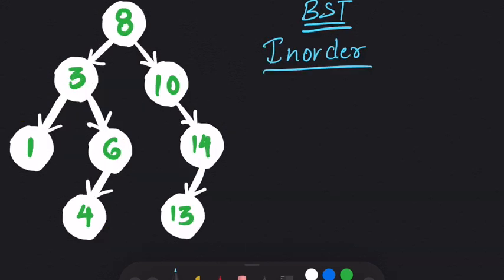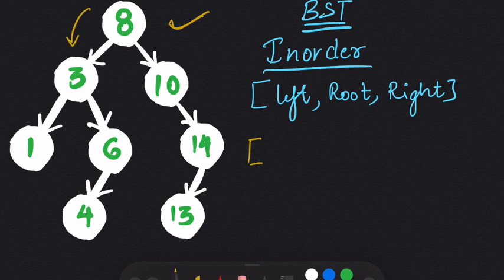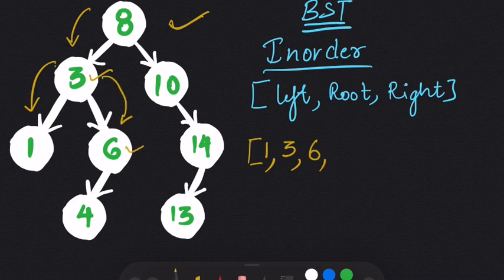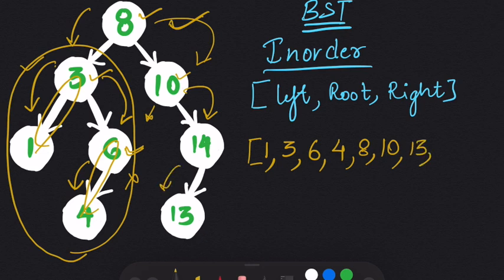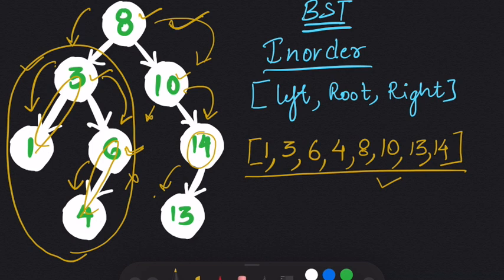Next, let's look at in-order traversal. For in-order, we first pick the left subtree, then the root, then the right subtree. We go to node 3's left child, which is 1, and enter 1. Then we enter the root 3, then the right node 6. At 6, we enter left child 4, and 6 has no right node. After the left subtree is done, we enter root 8, then move to the right subtree: node 10 has no left child, so we enter 10, then move to 14. Node 14 has left child 13, so we enter 13, then 14. The resulting list is in ascending order from 1 to 14.